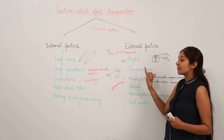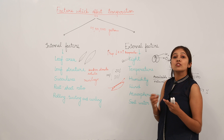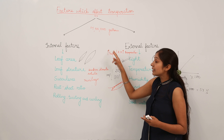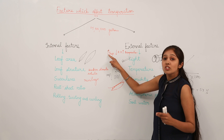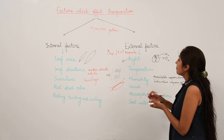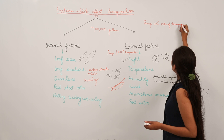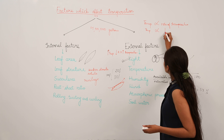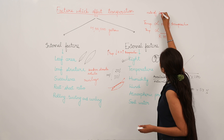Temperature affects transpiration in two ways. Higher temperature leads to more evaporation, so the rate of transpiration is higher. In terms of relative humidity: higher temperature means lesser relative humidity and more transpiration. Temperature is directly proportional to the rate of transpiration, while relative humidity and transpiration are inversely proportional to each other. Therefore: rate of transpiration is inversely proportional to relative humidity.